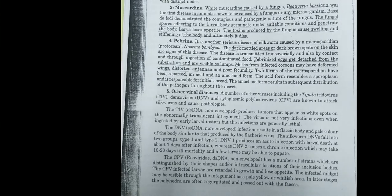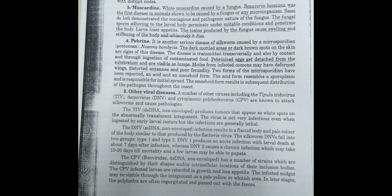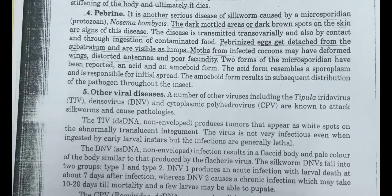The fourth disease is Pebrine, which is a serious disease caused by a microsporidian protozoan called Nosema bombycis. Signs include dark mottled areas and dark brown spots on the body. The eggs detach from the substratum and appear as lumps. Moths from infected cocoons may be deformed, with distorted wings and antennae.